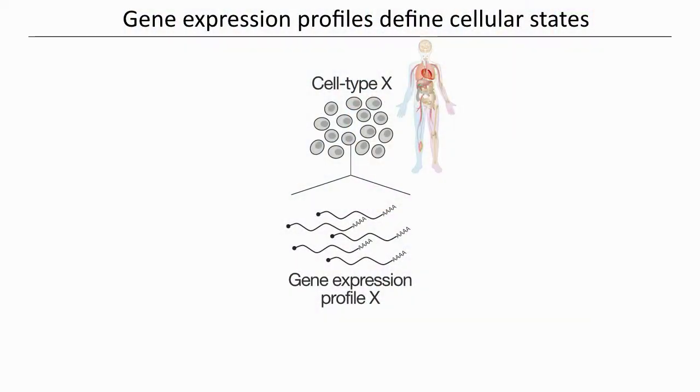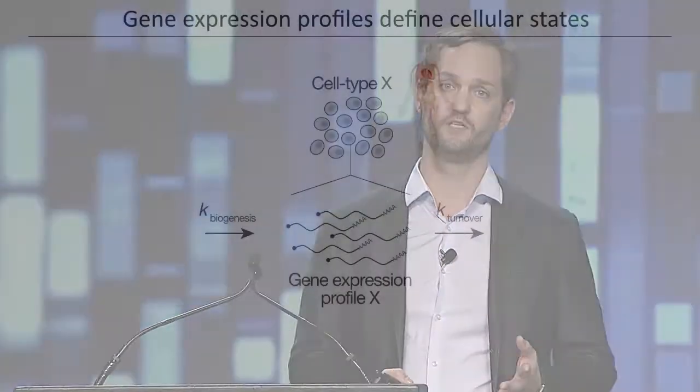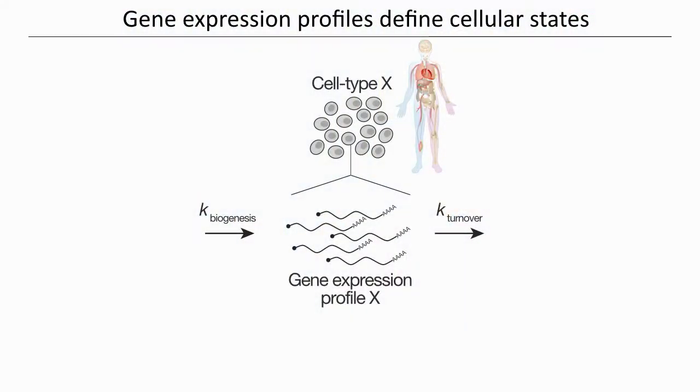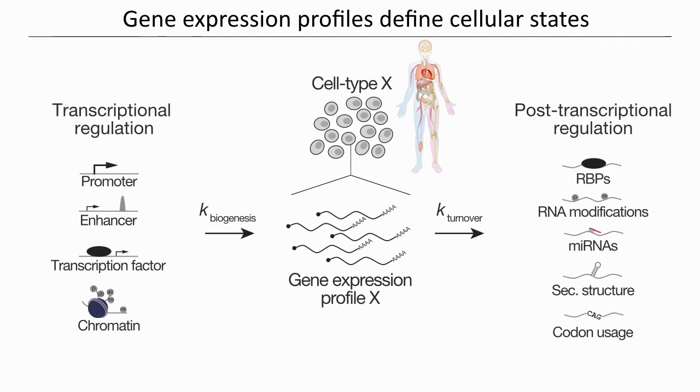Gene expression profiling by high-throughput sequencing has really revolutionized the way we can associate distinct gene expression profiles to certain cellular states, enabling us to generate molecular entry points to understand gene function in physiological and pathophysiological situations. Gene expression profiling delivers information on the relative abundance of RNA species at a given time point inside the cell. What it does not do is give us any information about how this gene expression profile is actually established — the rates at which each transcript is produced and turned over. But it's actually this information that provides detailed insights into the regulation of gene expression, both at the transcriptional and post-transcriptional level.